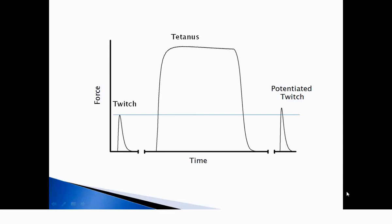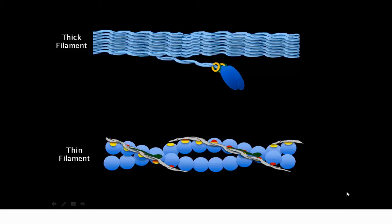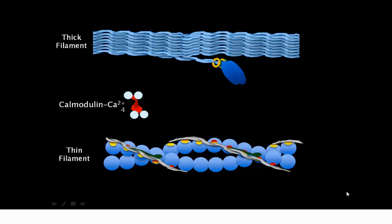The primary mechanism for potentiation is an increase in the calcium sensitivity of the contractile proteins that's mediated by phosphorylation of the myosin regulatory light chain. In resting skeletal muscle, the average position of the myosin head is close to the thick filament backbone. Calcium released out of the sarcoplasmic reticulum and into the cytosol can bind to calmodulin, which can in turn bind to the skeletal muscle isoform of myosin light chain kinase. This activates the enzyme, and in the presence of ATP phosphorylates the regulatory light chain found at the base of the myosin head.